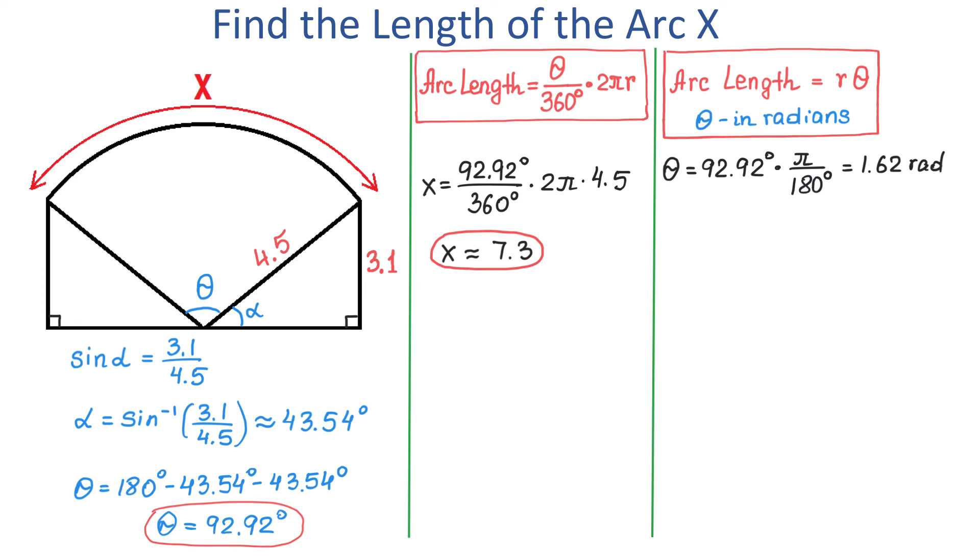And now, we will replace r with 4.5 and theta with 1.62. Then x equals 4.5 multiplied by 1.62, which is approximately 7.3 units.